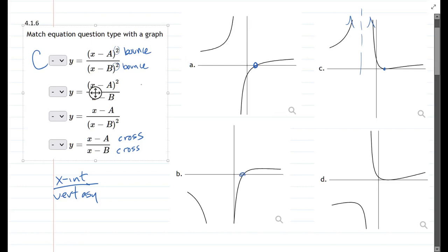The second one crosses at the x-intercept, so that's also another potential winner right there.